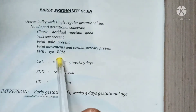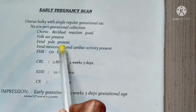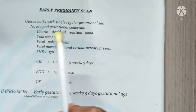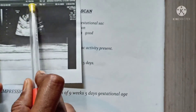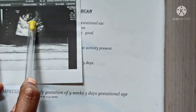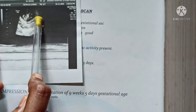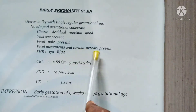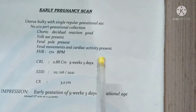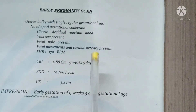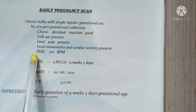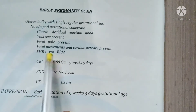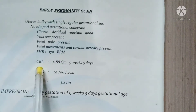Fetal pole is present. Fetal cardiac activity is present. Fetal pole means heart rate. FHR is 170 bpm, FHR is 150 bpm. Fetal pole is the trait. CRL is crown rump length.